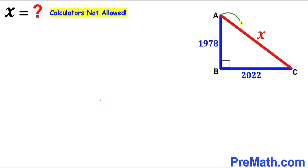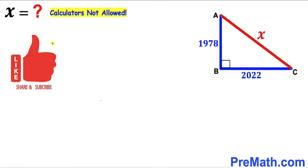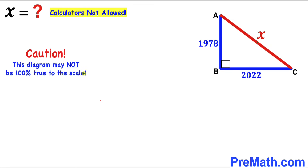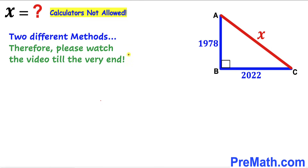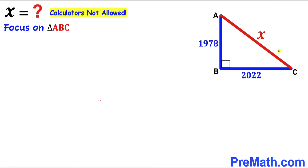In other words, we are going to find the value of the hypotenuse AC, and we are not supposed to be using calculators of any kind. Please don't forget to give a thumbs up and subscribe, and keep in mind that this figure may not be 100% true to scale. In this video I'm going to share two different approaches, so please watch the video till the very end.